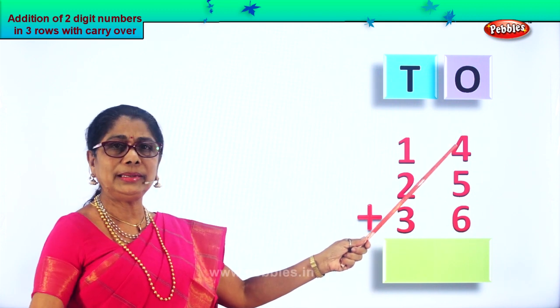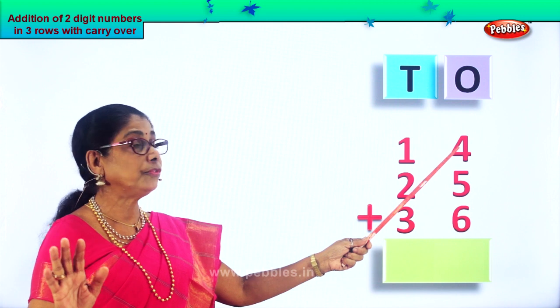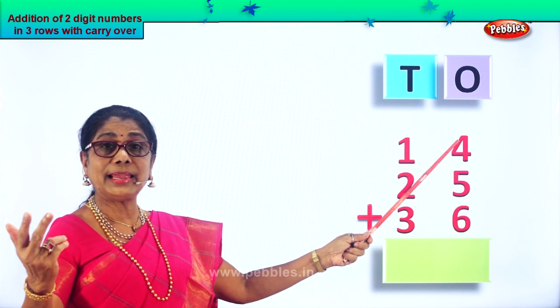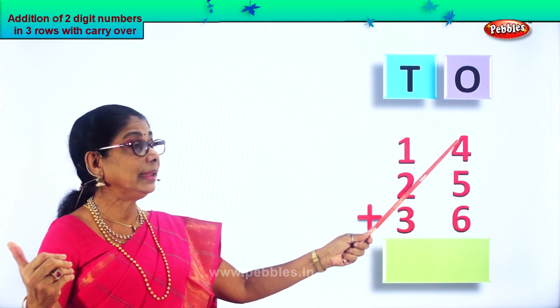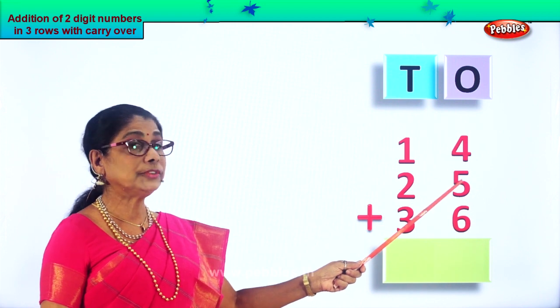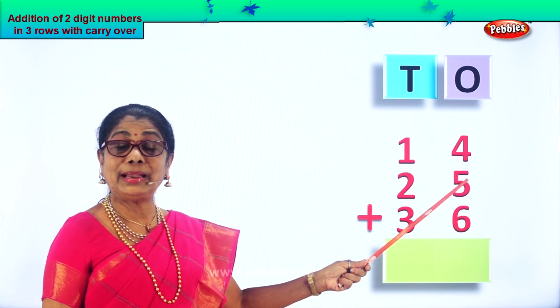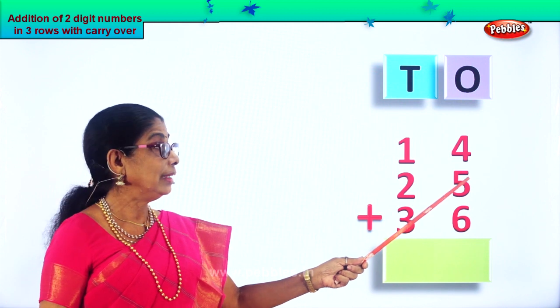What is four plus five? Four in the mind, five in the fingers. After four: five, six, seven, eight, nine. So five plus four is nine. Nine in the mind and six in the fingers.